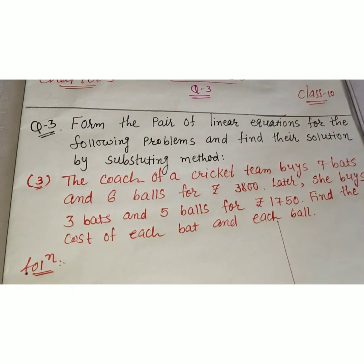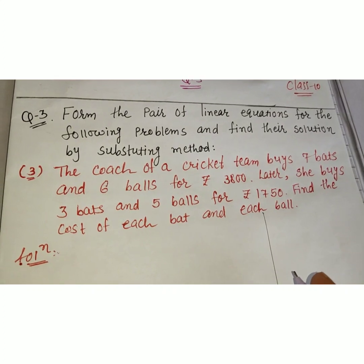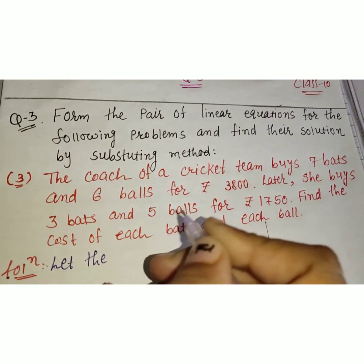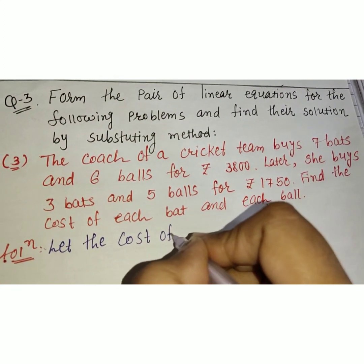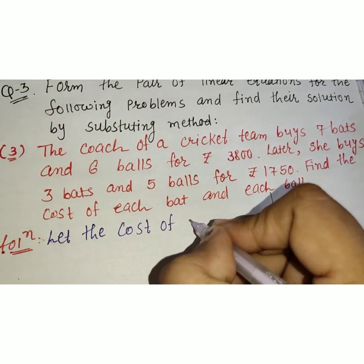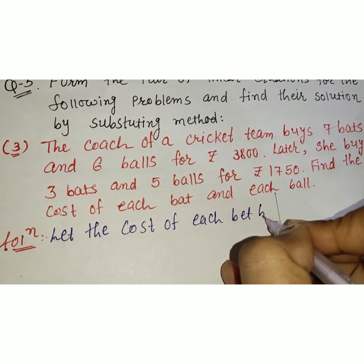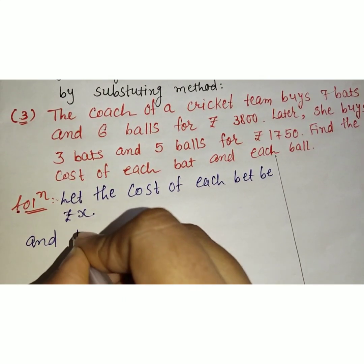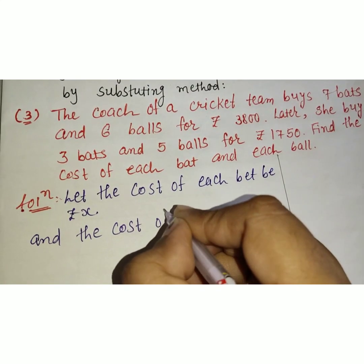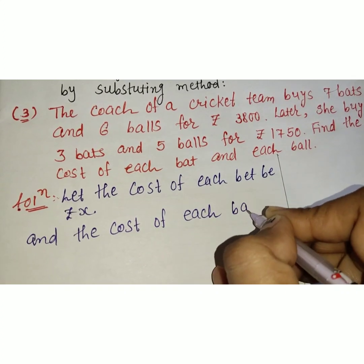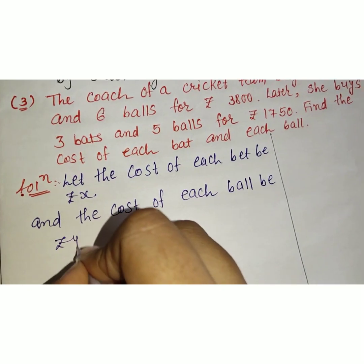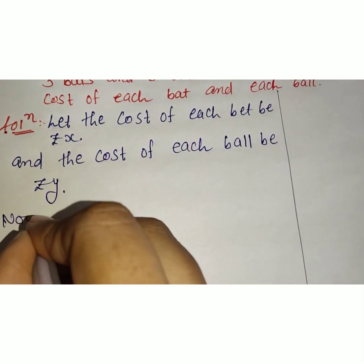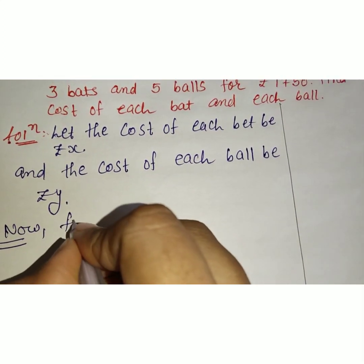We have to find the cost of each bat and each ball. First of all we have to assume: let the cost of each bat be rupees x and the cost of each ball be rupees y.